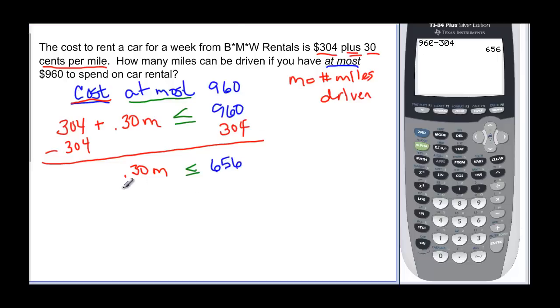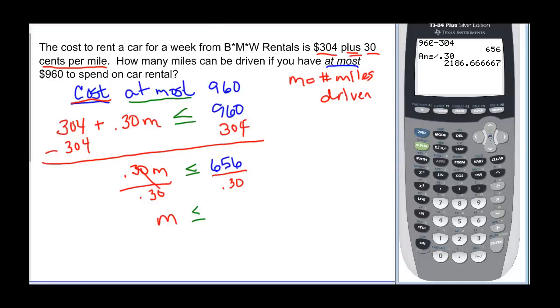And then I just have to divide by the 0.30 to get to m by itself. So divide by 0.30 on this side. And this side I get m and then it's going to be less than or equal to, and come over here and we will divide our 656 by 0.30. And we find out that that is 2186.66 repeating or 667. So when I write my sentence I'll just round that to the nearest tenth maybe, because that's probably the way that they do it in real life.